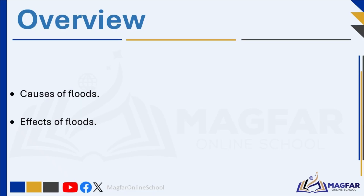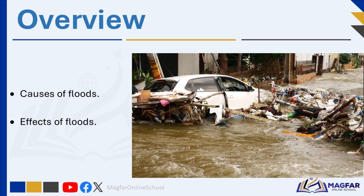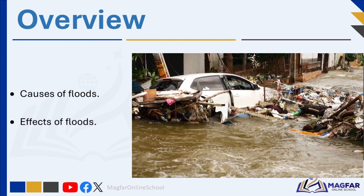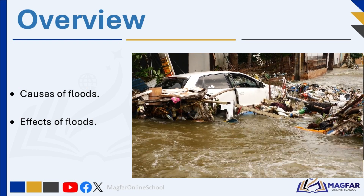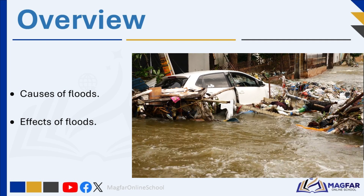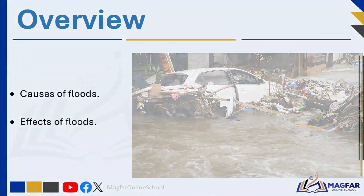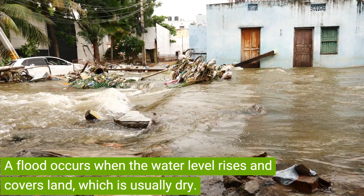Good day and welcome. Today we have an exciting class for you on floods. A flood is when the water level rises and covers land which is usually dry. Low-lying areas near rivers and coasts are the most likely places to experience flooding. Floods can be started by natural events such as storms, prolonged rains, and earthquakes. Sometimes a flood can be the result of human influence as well — people construct dams that overflow, and water pipes also burst causing flooding.